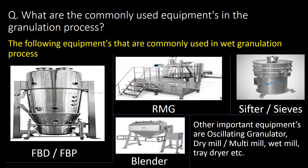What are the commonly used equipment in the granulation process? The commonly used equipment in the granulation process are: FBD (fluidized bed dryer), FBP (fluidized bed processor), RMG, shifter and sieves, blender, and other equipment such as oscillating granulator, dry mill, multi mill, wet mill, and tray dryer.